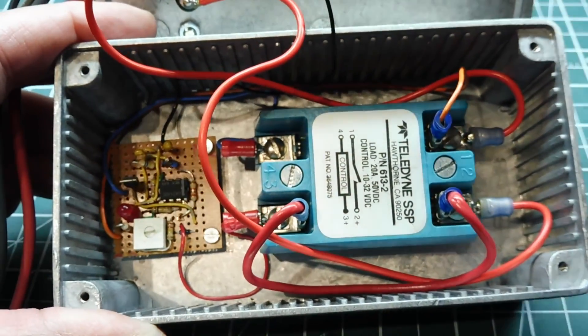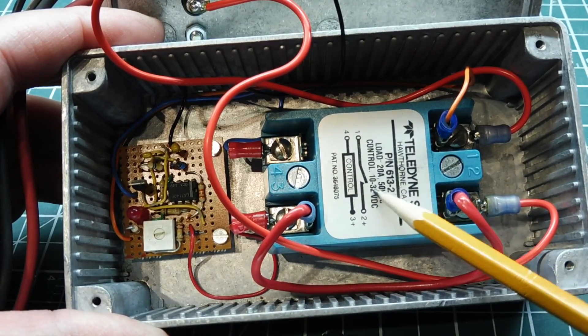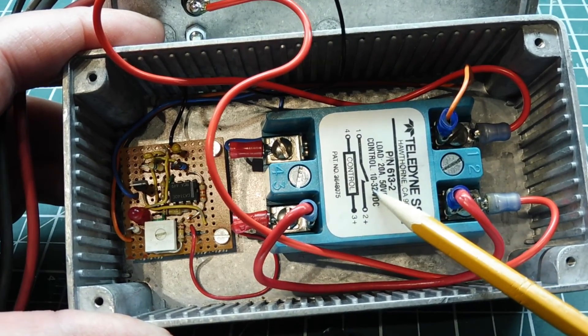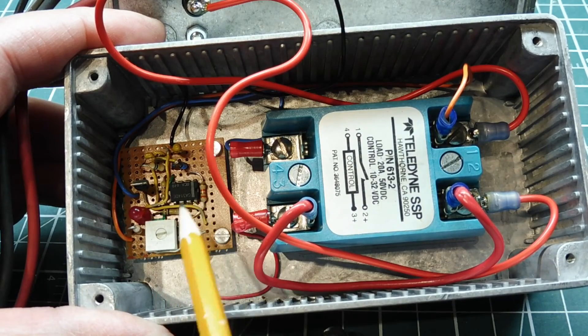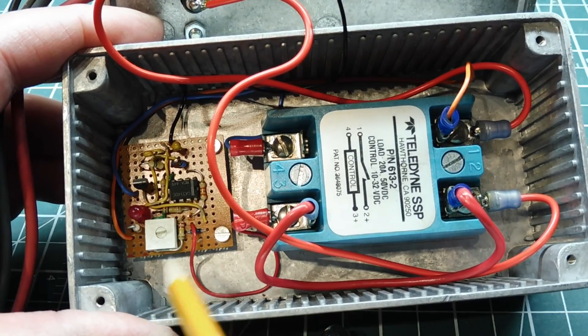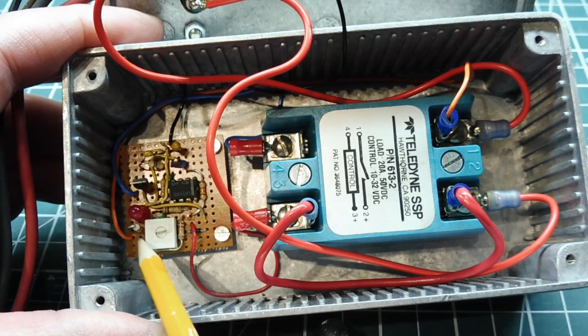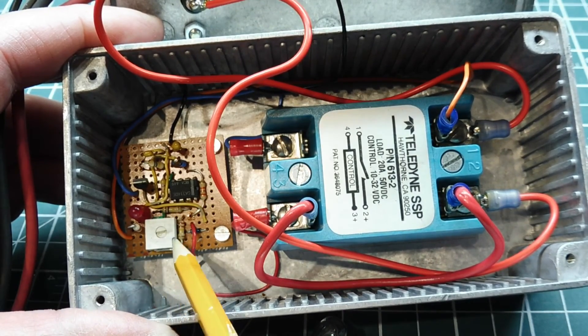So the first thing you can see is my DC relay, it's my DC relay here, which controls power to the load. Then I have my little control circuit board, and I mounted everything on a Vero board, a Vero strip board. And you can see my adjustment potentiometer to set my cut-in voltage.